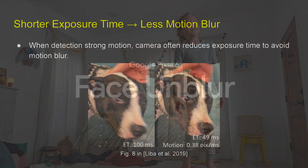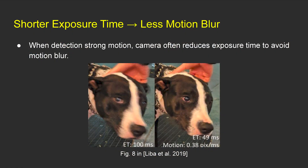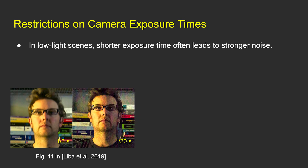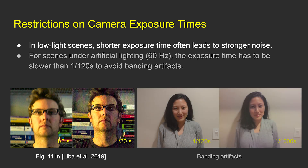To avoid motion blur, mobile cameras today often reduce the exposure time when detecting motion. However, in low-light conditions, shorter exposure time will make images look too noisy. On the other hand, under 60 Hz AC-supplied artificial lighting, the camera has to expose slower than 1/120 seconds to avoid banding artifacts caused by the sensor rolling shutter effects. Therefore, we cannot always rely on shorter exposure time to avoid motion blur.